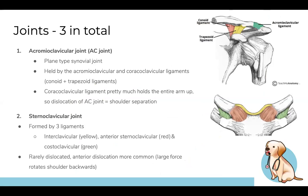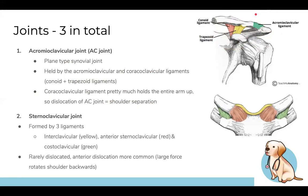Now looking at the individual joints. The acromioclavicular joint is between the acromion and the clavicle, held together by the acromioclavicular ligament. Importantly, the coracoclavicular ligament — between the coracoid process and clavicle — is made up of the conoid and trapezoid ligaments. This ligament holds the whole arm up; if severed, the arm drops, which is essentially shoulder separation.